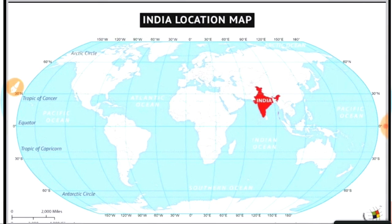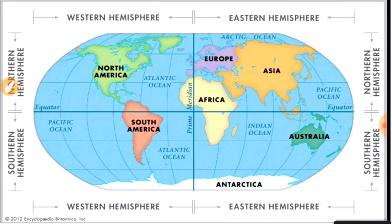Here you can see the exact location of India — it is located above the equator. Going through the hemispheres, it is clearly in the eastern hemisphere and clearly in the northern hemisphere. So India lies in the north-eastern hemisphere.